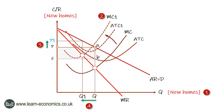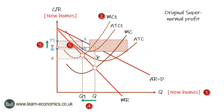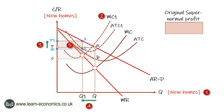Also, in evaluating the impact of the cost increase, it is possible that other building costs could have fallen, so the effect might not be as large as shown. The output of houses is likely to fall to Q1 — how much depends on the PED and the gradient of the AR curve. Profits before the cost increase are shown as rectangle P-A-B-C; they have clearly fallen to rectangle P1-X-K-M.